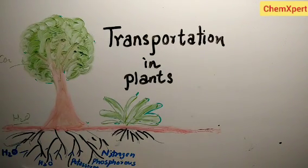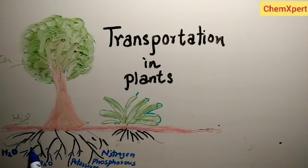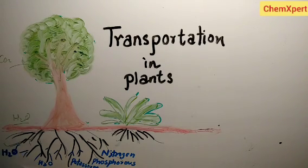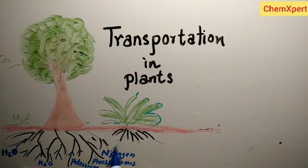We can say that for plants, the soil is the richest and the nearest source of raw materials like nitrogen, phosphorus, potassium, and other minerals. So in addition to water, some other minerals are also absorbed from the soil.